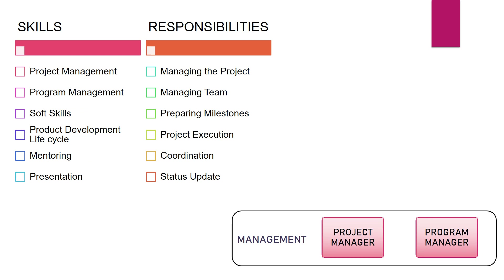Then come the management roles. While a project manager manages multiple tasks within a project, a program manager coordinates between multiple project teams operating to achieve the same objective or having some dependency with each other. The responsibility of a project manager starts with managing the project, defining project scope, scheduling, and resource management. You need to pursue some professional certificates like PMP or PMO to land at this level.